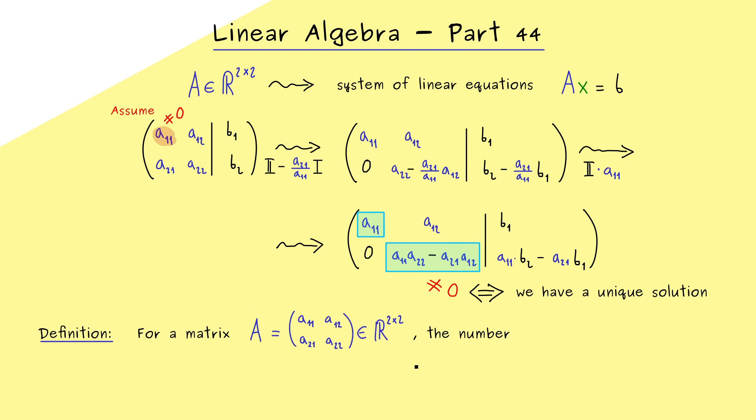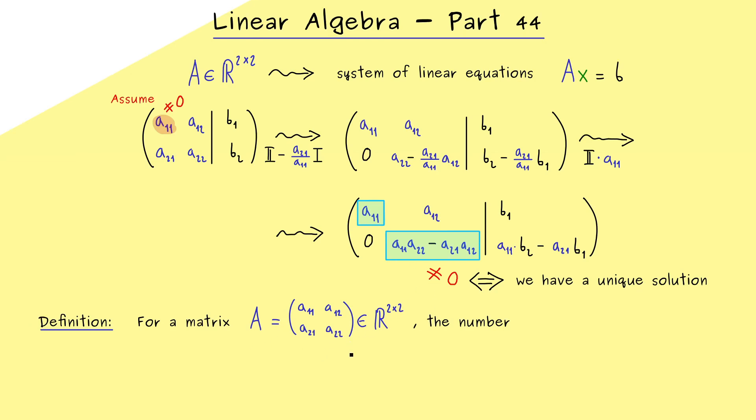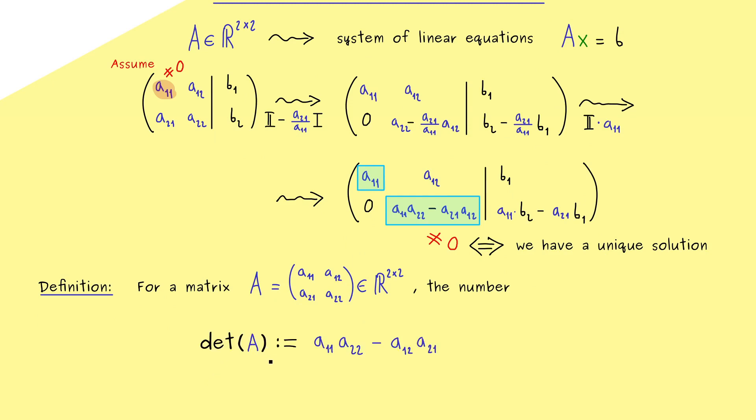Therefore we will formulate the definition exactly in this sense. So we choose a general 2×2 matrix A, and then this number here is called the determinant of A. And usually we use this short notation here to represent the real number. And please recall it's given by a₁₁ times a₂₂ minus a₁₂ times a₂₁.